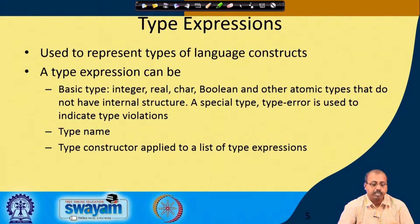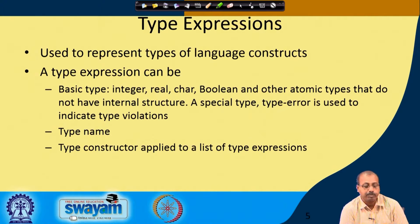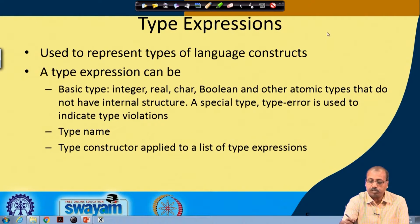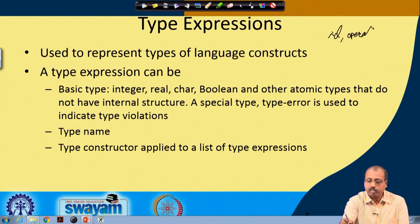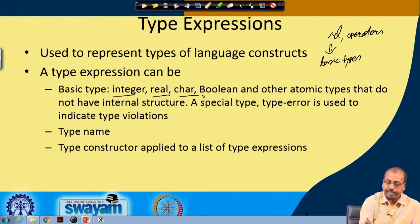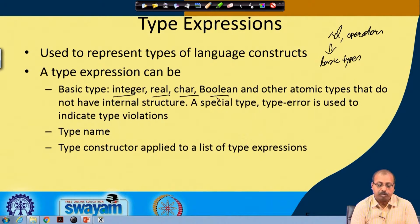A type expression can have basic types, just like any expression can have basic identifiers and operands. In a type expression, the basic types are synonymous to identifiers in a normal expression. Basic types include integer, real, character, Boolean, and other atomic types that do not have internal structure.